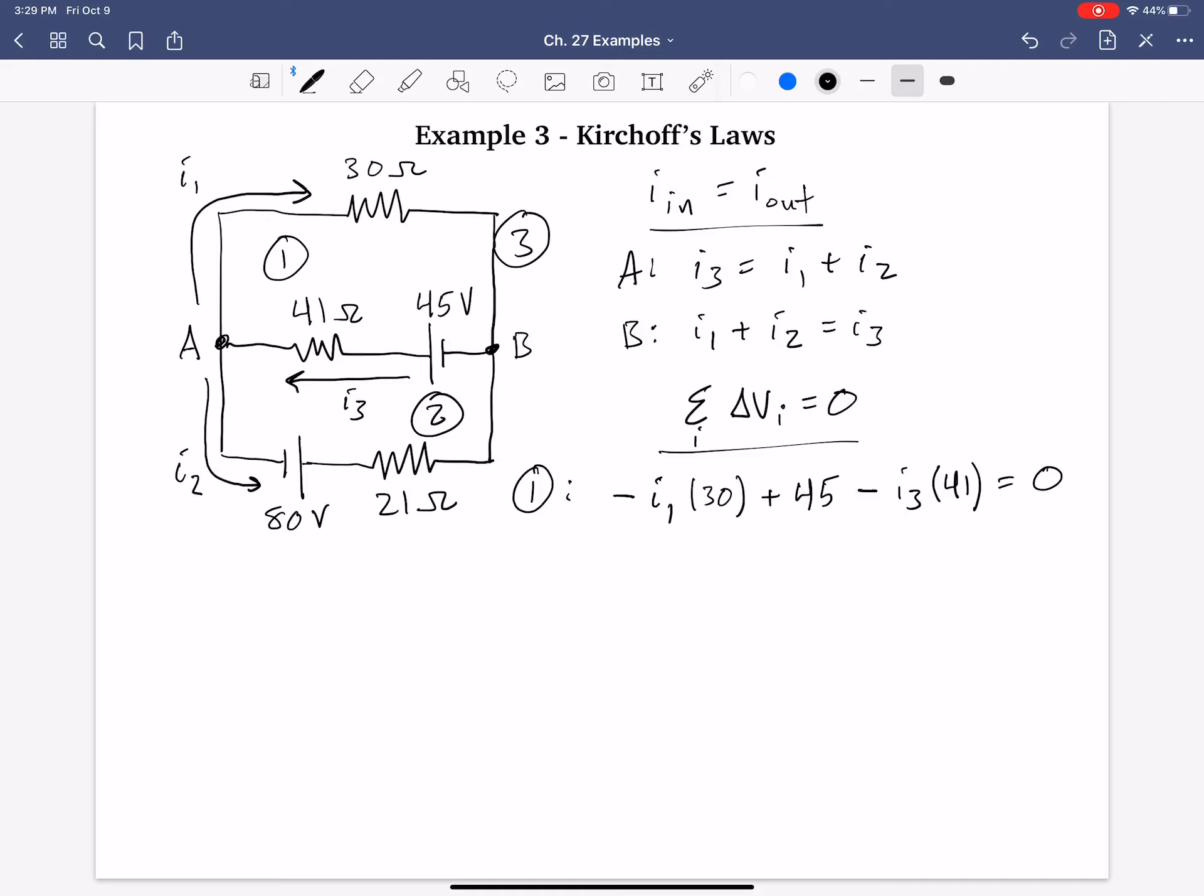For loop two down below, again, choose an arbitrary spot to start at. I'll also choose it, but it doesn't matter. Following the direction of the current we've specified, going down, we now, the first element we encounter is a potential increase of 80 volts. I'll just label it as 80, and then we decrease by an amount I2 times the resistance of that one. So minus I2 times 21 ohms. And then coming up to B, again at that node, but we're in loop two, so we go through the middle now, and again, it's current three.